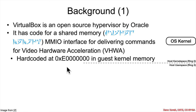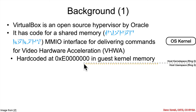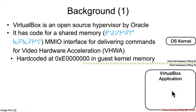That interface is hard-coded inside of the guest VM in the kernel at memory address E0007000. You've got your typical host kernel and user space separation.